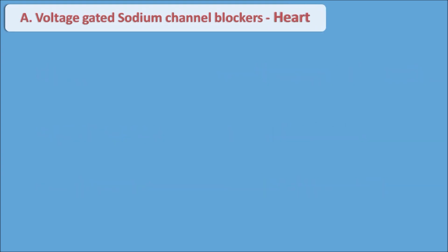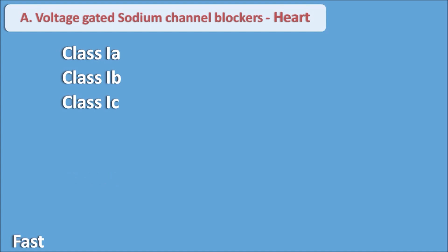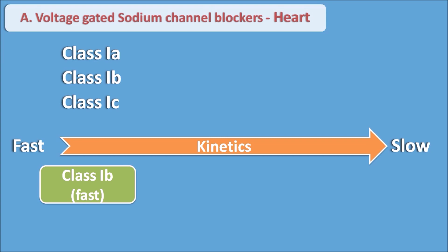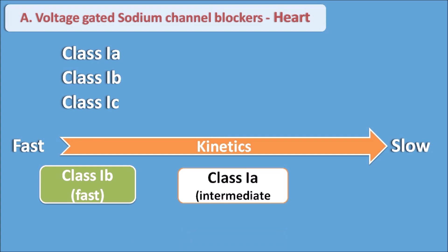Let us start with Class 1 anti-arrhythmic agents, which are voltage-gated sodium channel blockers acting on the heart. Class 1 anti-arrhythmic agents are further divided into Class 1a, Class 1b, and Class 1c. They are separated based on their kinetics of association and dissociation with the sodium channels. Some drugs associate and dissociate very fast, others very slowly. Class 1b drugs have fast kinetics, Class 1a have intermediate, and Class 1c have slow kinetics.